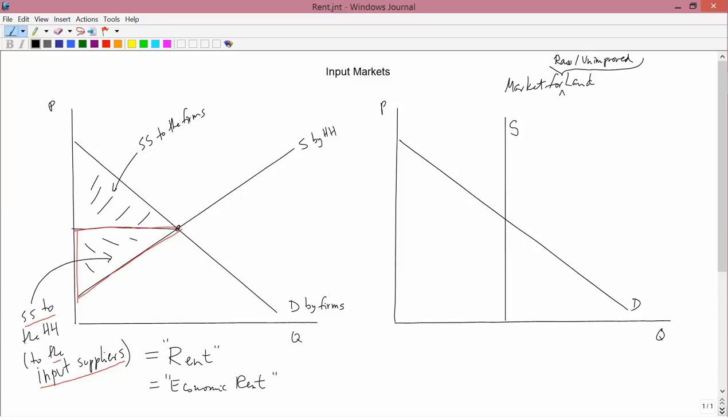Because raw, unimproved land, by definition, is land that doesn't have any opportunity cost. And so the supply curve is vertical. You'd take any price in return for renting out the land for, let's say, one year.